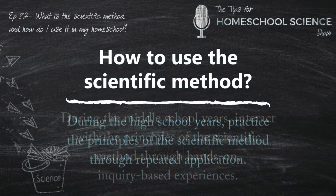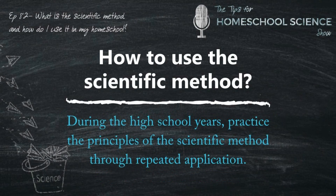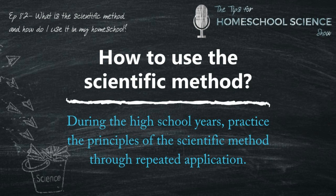As we move into the high school years, students can gain competency with the principles of the scientific method through repeated application. At this point, we need to offer high school students freedom to manage their own experiments and draw their own conclusions. We will still be supervising everything they do, but these students will take a little more of the reins of their education. We can mentor high school students as they learn to follow the steps of the scientific method on their own.